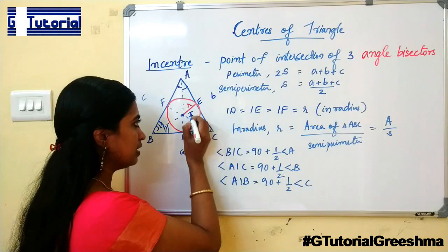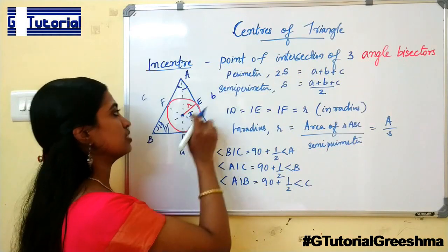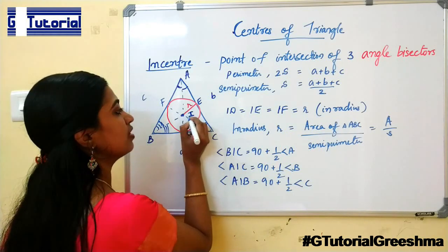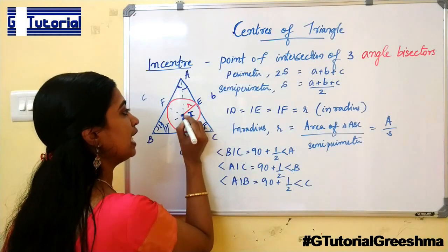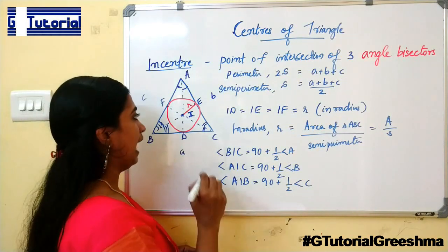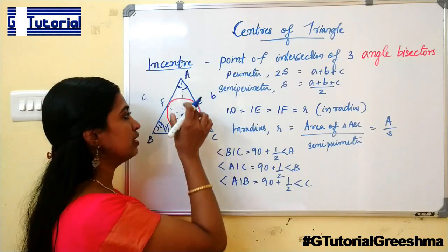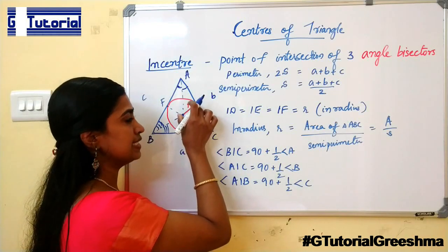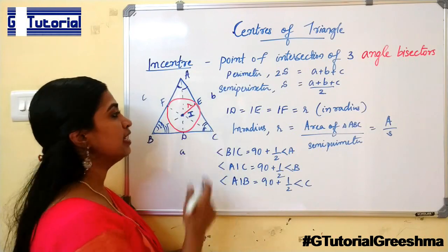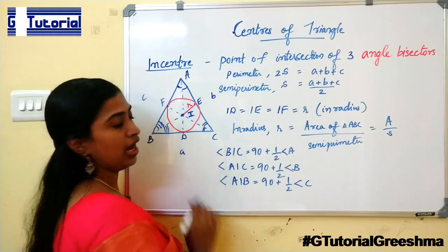I represents the incenter. The incenter is equidistant from all three sides of the triangle. If you draw a circle using this distance as the radius, the circle so obtained is called the incircle. And this radius is called the inradius, denoted by r.